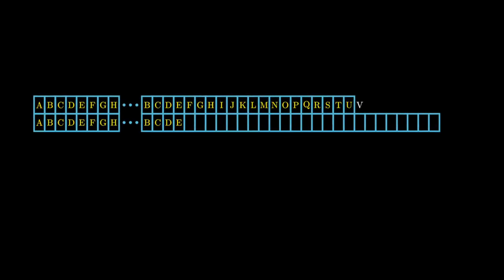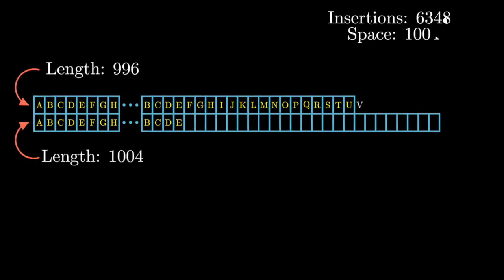If we try to scale it up to 1000 elements, this is what the computer has to do while processing this resize for the 997th element. After inserting our 1000th element, we have 63,500 insertions and 1004 units of space.